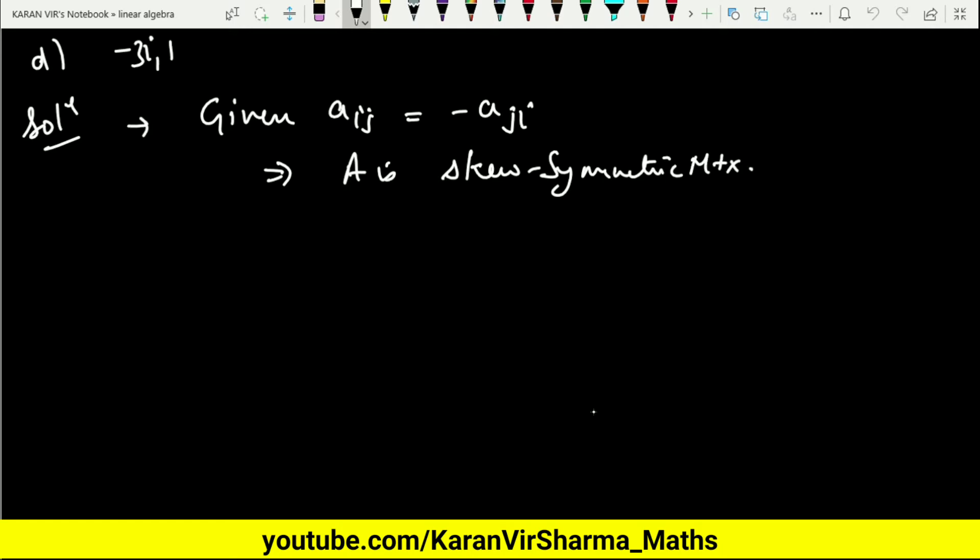The eigenvalues of a skew-symmetric matrix are either zero or purely imaginary. So this is the result which we are aware of.